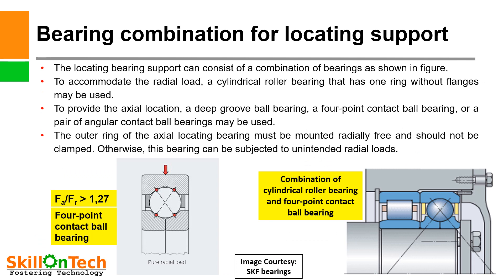Bearing combinations for locating support. The locating bearing support can consist of a combination of bearings to accommodate radial load. A cylindrical roller bearing with one ring without flange may be used. To provide axial location, a deep groove ball bearing, a four-point contact ball bearing, or a pair of angular contact ball bearings may be used. The outer ring of the axial locating bearing must be mounted radially free and should not be clamped; otherwise, the bearing can be subjected to unintended radial loads.